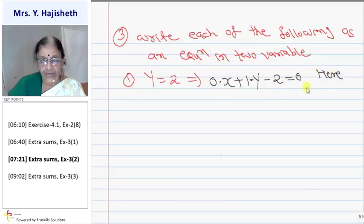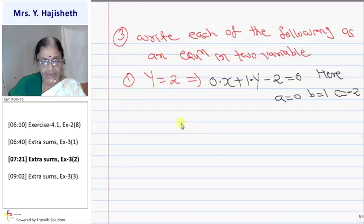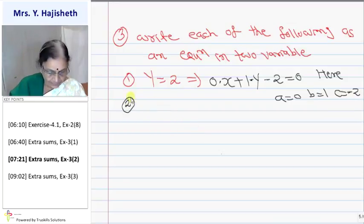For y equals two, written as zero times x plus one times y minus two equals zero, we get a is zero, b is one and c is minus two. Second: five y equals two.